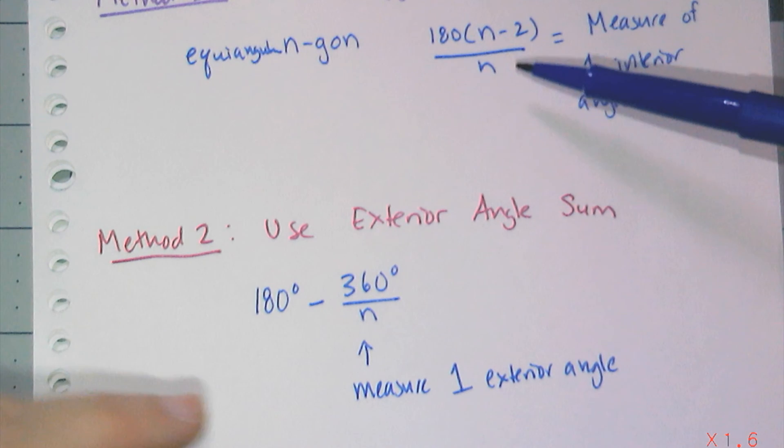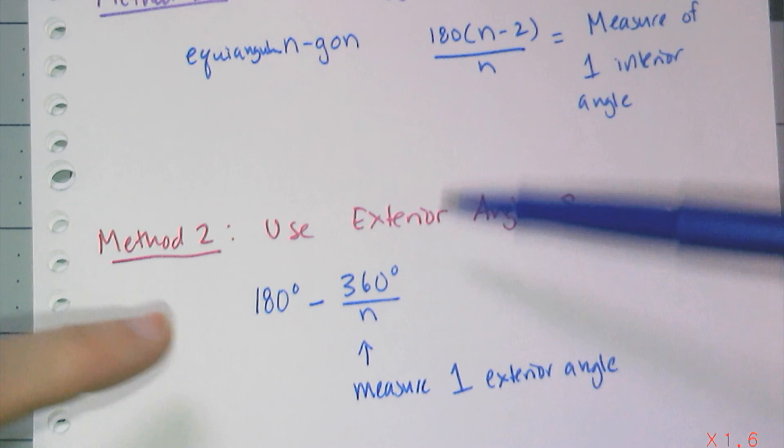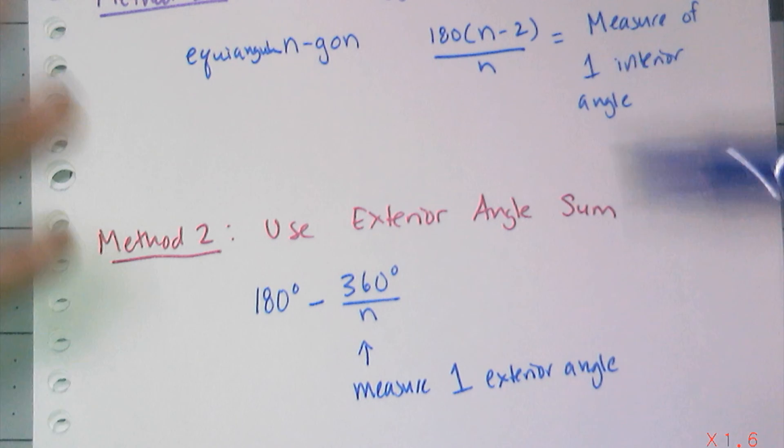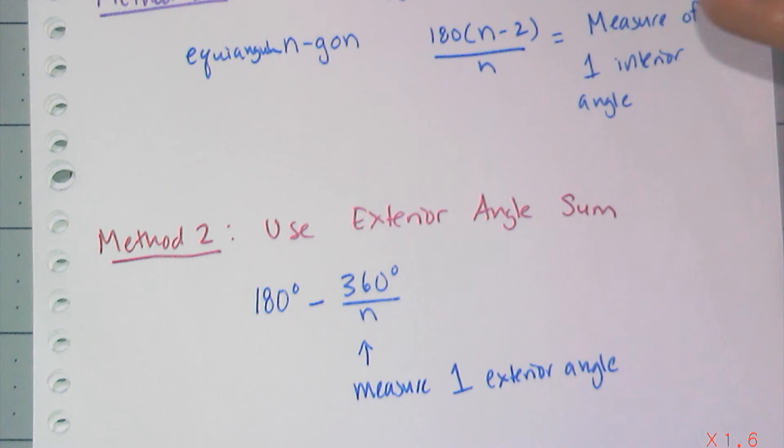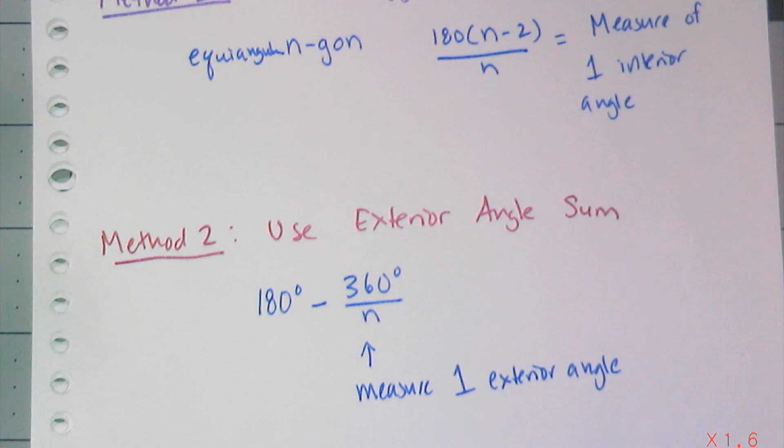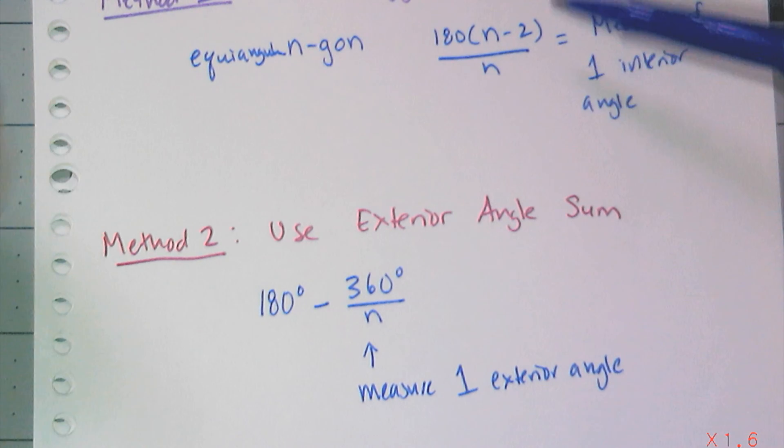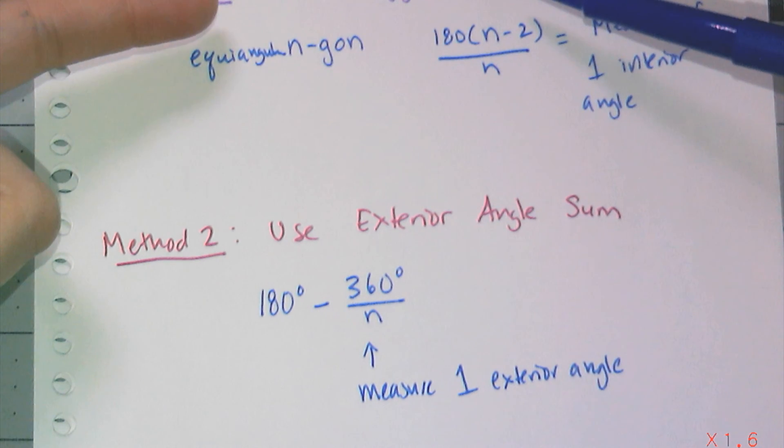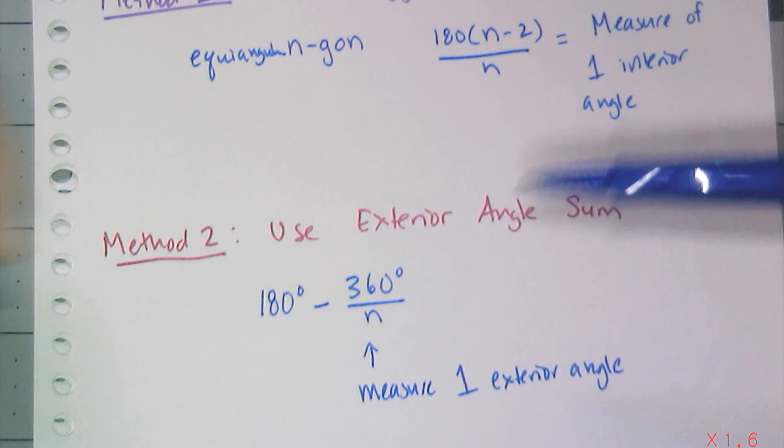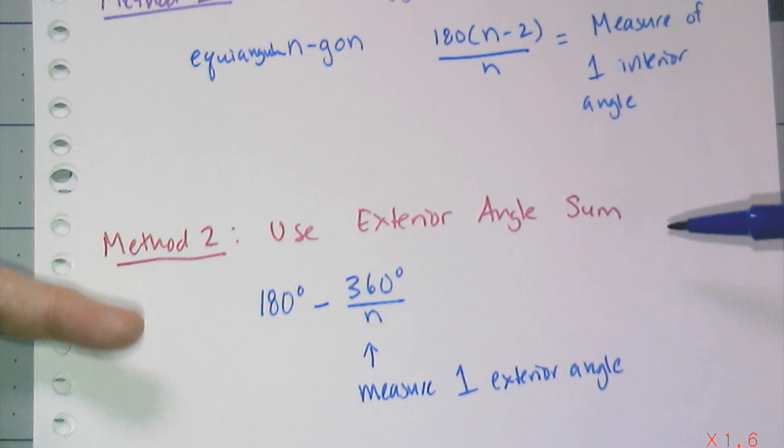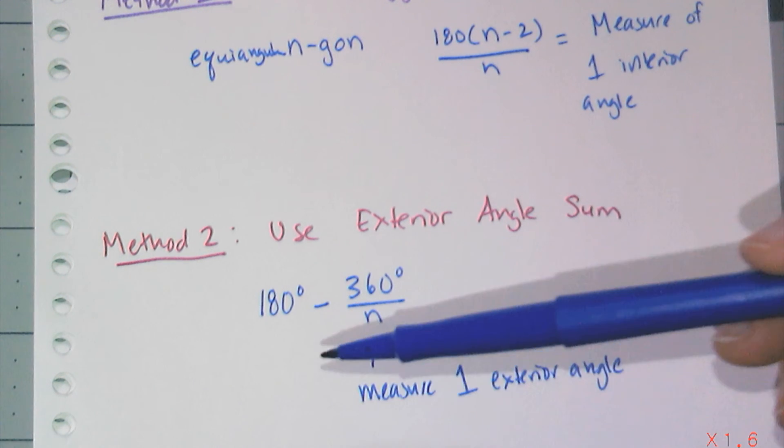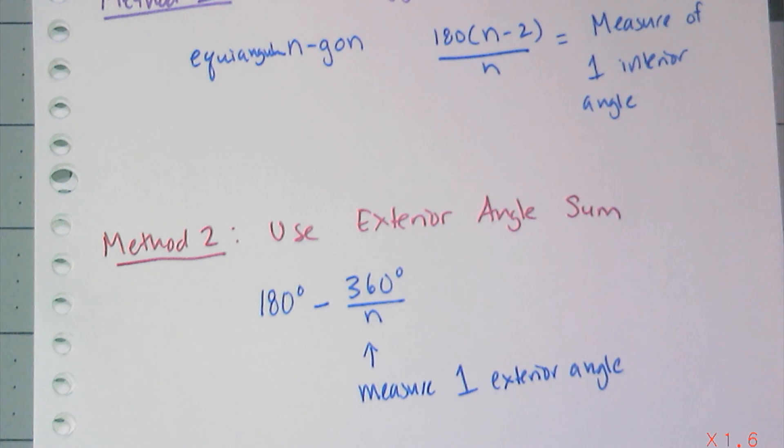Now, of course, if I simplified this one algebraically, I would get this one. So algebraically, they're equivalent. This is simplified. That is not simplified. But it's kind of cool to see that they come from different perspectives. Like it's not just an algebraic simplification. This formula comes from taking the polygon sum and dividing by the number of angles to get one angle. This is taking the perspective of using the exterior angle sum and the fact that the exterior angle and interior angle are linear pairs. So I think that's pretty cool.